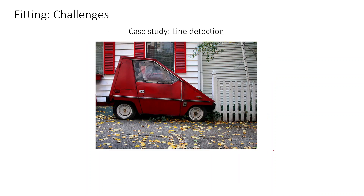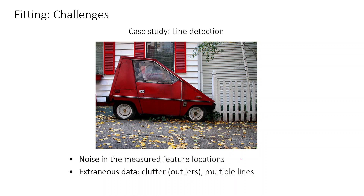This is slightly challenging because even if you think about line detection, there is noise in the measured feature locations, and there is extraneous data. For example, if you want to detect the lines that define the car, there are lines that define the window that look similar because of the color. Then there can be missing data and occlusions — meaning if you want to detect the lines that define the window, it has been occluded by the car.